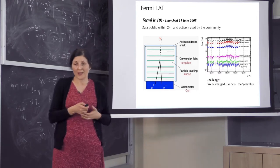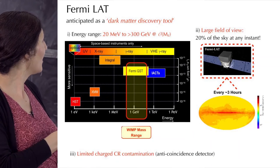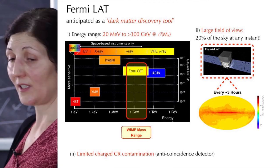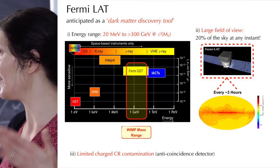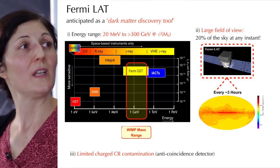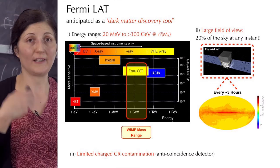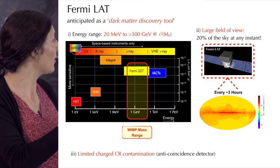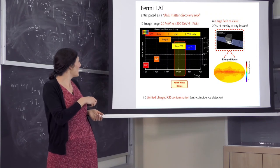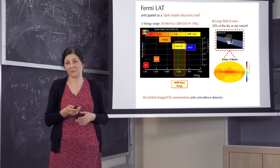So why Fermi-LAT is so relevant for dark matter search? It is because it covers exactly this energy range from 20 MeV to above 300 GeV, which is exactly the energy where we said we expect these WIMPs to appear. Another property of these telescopes is that it has a large field of view. It scans 20% of the sky at every instant and crosses all the sky every three hours. In this way, we actually can look everywhere on the sky and exactly in the energy range where we believe these WIMP particles exist.